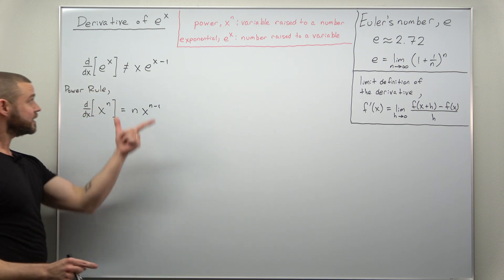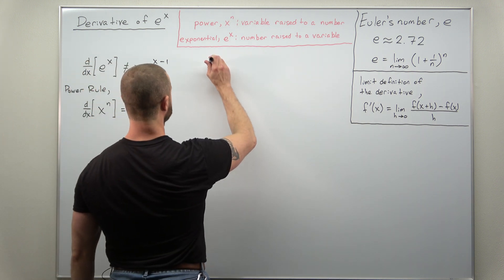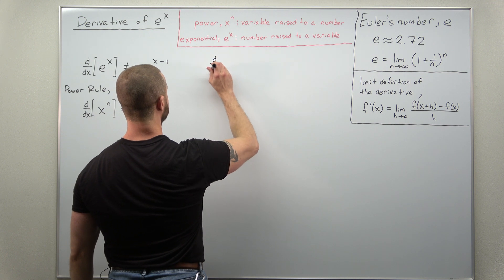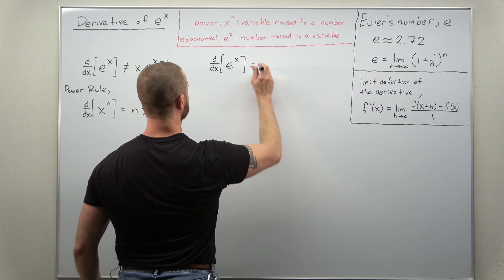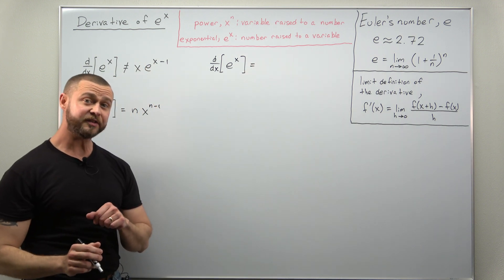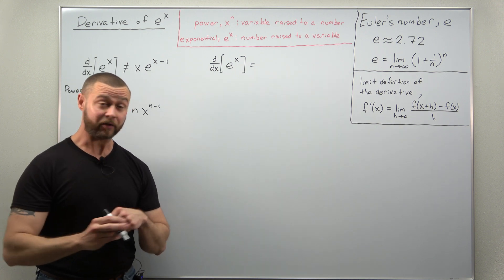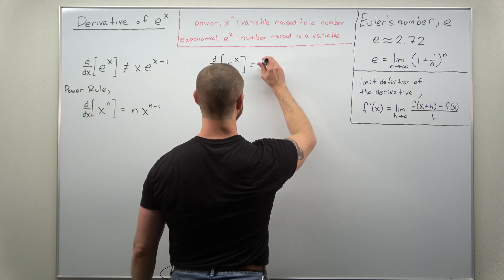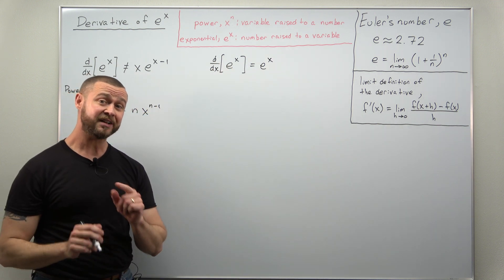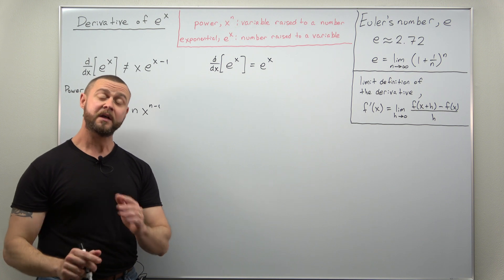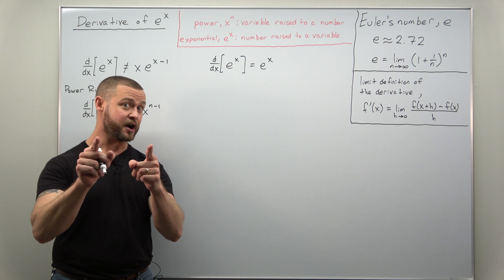So again, this is one of the most common mistakes. The correct answer for the derivative of e to the x is really simple and kind of mind-blowing: the derivative of e to the x is itself, e to the x. This exponential function is its own derivative, and there are many consequences for that throughout the sciences and engineering.